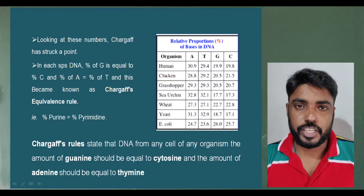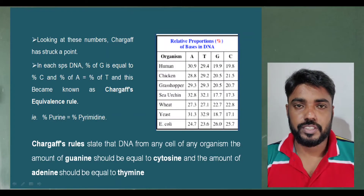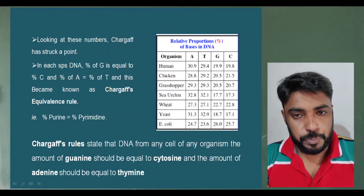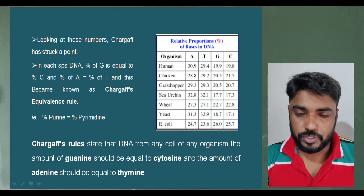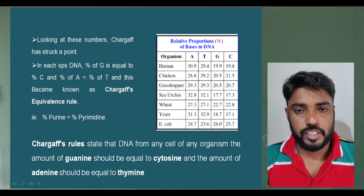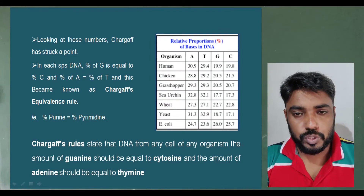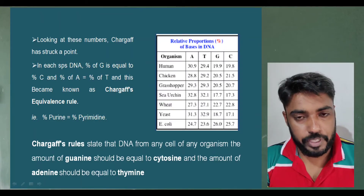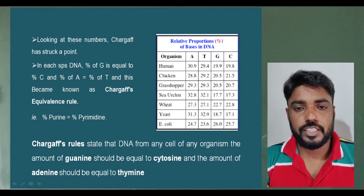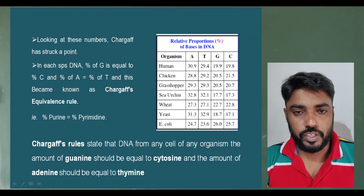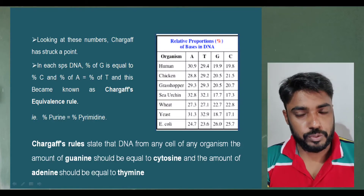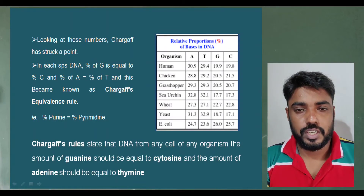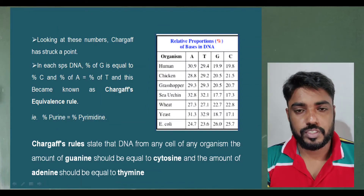From that he observed that in each species the percent of adenine is equal to the percent of thymine, and the percent of guanine is equal to the percent of cytosine, and this became Chargaff's equivalence rule.